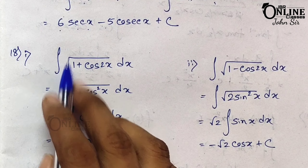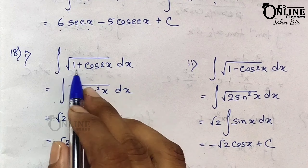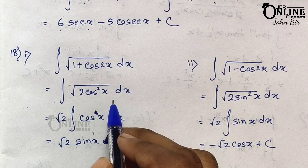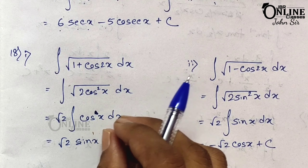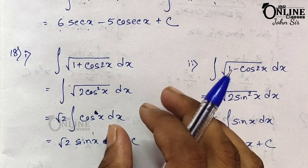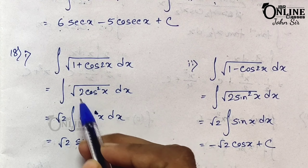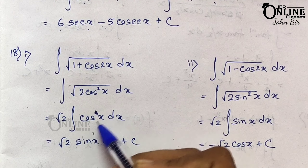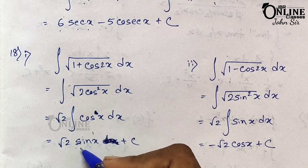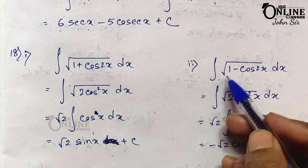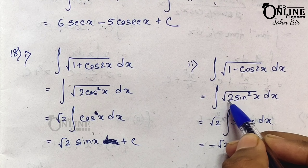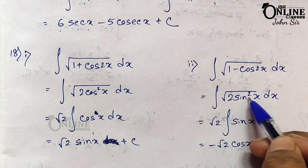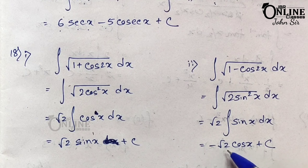Sum 18.1: integration of √(1 + cos 2x). Using formula 1 + cos 2x = 2cos²x, so √(2cos²x) = √2·cos x. Integration of cos x = sin x, so answer is √2·sin x + c. Sum 18.2: integration of √(1 − cos 2x). Using 1 − cos 2x = 2sin²x, so √2·sin x. Integration of sin x = −cos x, so answer is −√2·cos x + c.